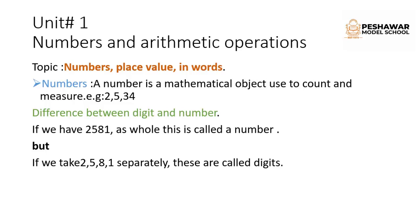So let's start. Our topic is numbers, place value, and how we can write in words. A number is a mathematical object used to count and measure — for example, 2, 5, and 34. Before understanding numbers, we must understand the difference between digits and numbers. For example, 2581 as a whole is called a number, but if we take 2, 5, 8, 1 separately, these are called digits.